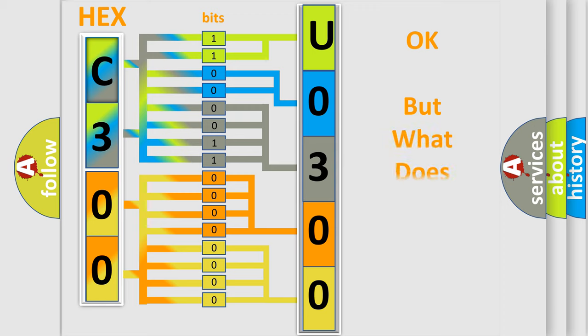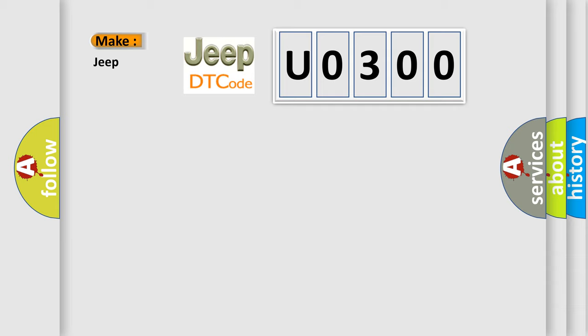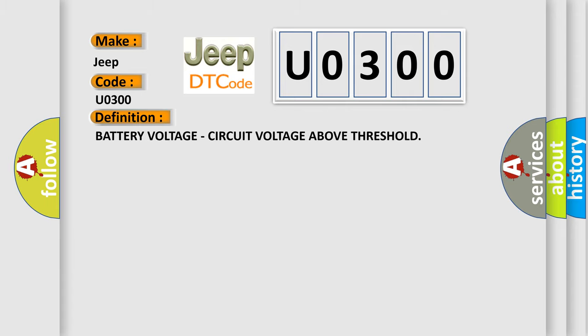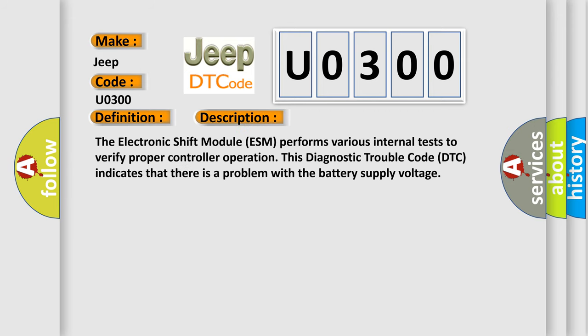The number itself does not make sense to us if we cannot assign information about what it actually expresses. So, what does the diagnostic trouble code U0300 interpret specifically for Jeep car manufacturers? The basic definition is: battery voltage — circuit voltage above threshold. The electronic shift module (ESM) performs various internal tests to verify proper controller operation. This diagnostic trouble code indicates that there is a problem with the battery supply voltage.